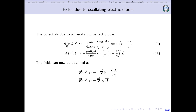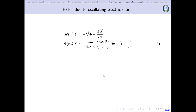Now we can find the fields: the electric field is negative gradient of φ minus ∂A/∂t, and B equals curl of A. We will evaluate these one by one. First, we find the electric field, which requires the gradient of φ. Since φ is a function of r and θ, it is easier to evaluate the gradient in spherical polar coordinates.